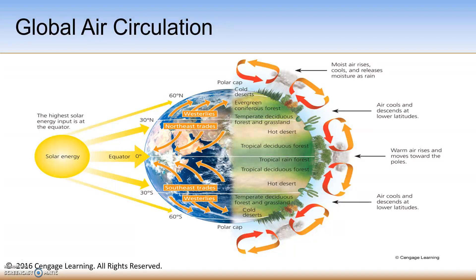This diagram depicts that tropical rainforests are typically located around the equator, and hot deserts are found at middle latitudes going both north and south from the equator. Areas north and south of the equator have equivalent types of biomes — a term that will be defined in the next slide.